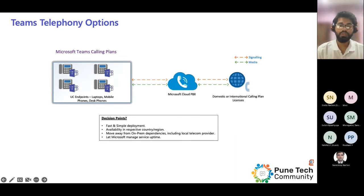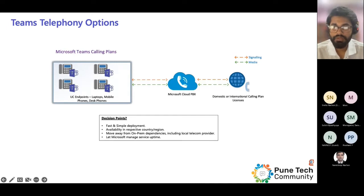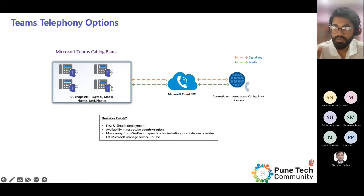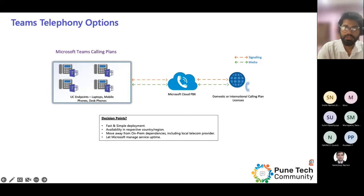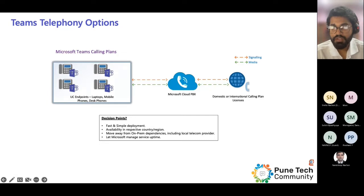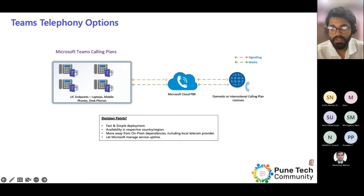Moving on to the first option: Microsoft Calling Plan for domestic and international calling. Here you procure a license from Microsoft and assign it to users. The phone number can either be ported to Microsoft from local providers, or new numbers can be procured. The first decision point is that it requires no setup — for example, if you're dealing with a customer who requires their users to adopt Microsoft Teams and needs a greenfield deployment of PSTN connectivity with Teams, you can choose the calling plan, provided it is available in the country where you are hosting your users.